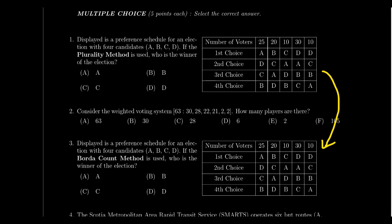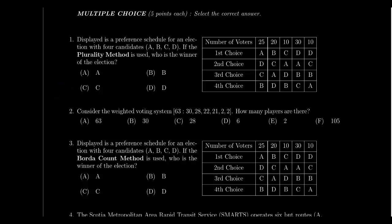Don't fixate on repeated preference schedules — it may actually make things easier. It is very important that you read the instructions carefully on voting questions, because two prompts might look identical except for the specified voting method. Question 1 usually starts with a fairly simple question. You might be asked to compute the winner using the plurality method, which is perhaps the easiest to implement, or I might swap it out for approval voting.